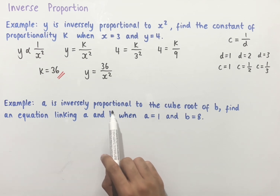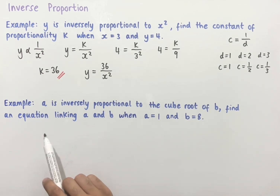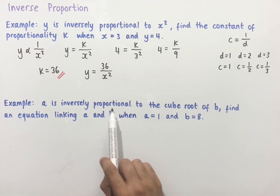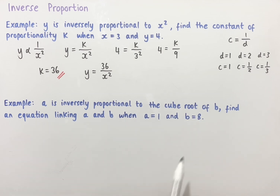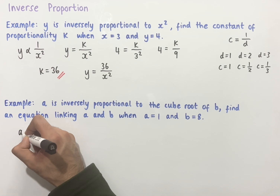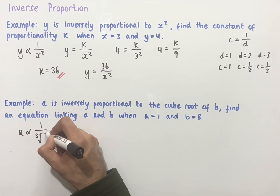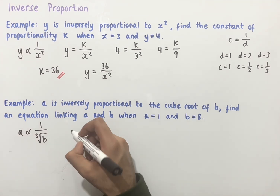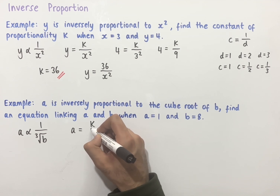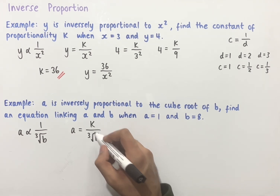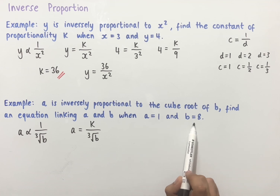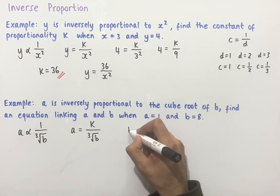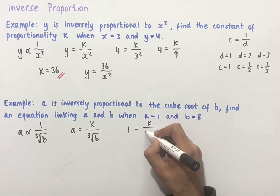The second example says a is inversely proportional to the cube root of b. Find an equation linking a and b when a equals 1 and b equals 8. We can think of this as a being directly proportional to the reciprocal of the cube root of b. Writing that as an equation, we have a equals k over the cube root of b. Substituting a equals 1 and b equals 8, we get 1 equals k over the cube root of 8.